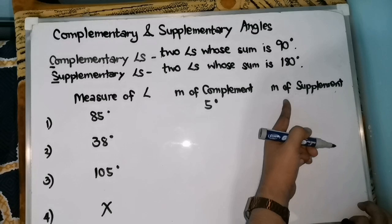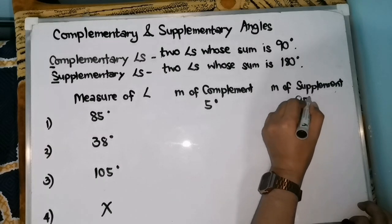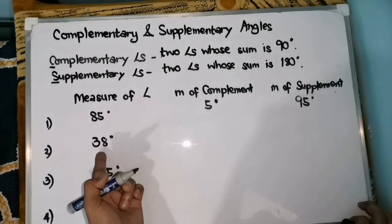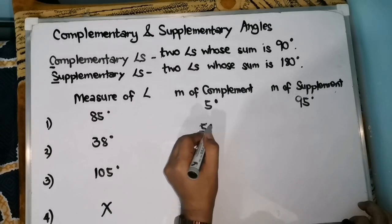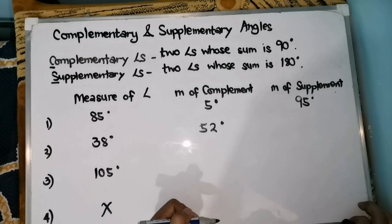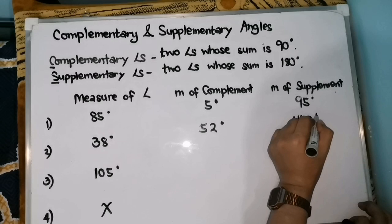How about the measure of its supplement? Therefore, 180 minus 85 is 95 degrees. Let's have another example. For number 2: 38 degrees. Its complement: 90 minus 38 degrees is 52 degrees. How about its supplement? 180 minus 38 degrees is 142 degrees.